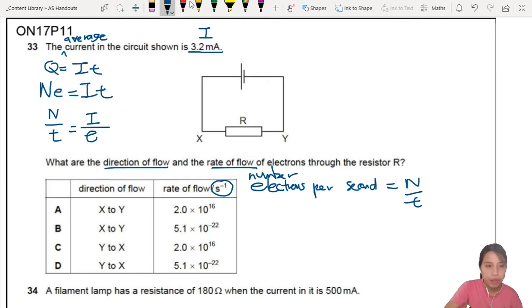There. This is what we're trying to find. Okay, so we need to do I over e. Now we can do that. So n over T, which is the rate of flow, numbers per second, will be current 3.2 milliamps.